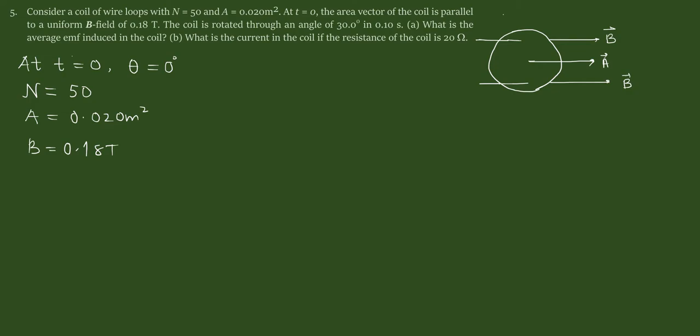Now in the time period of 0.10 seconds the orientation is changed so that the angle between the area vector and B is 30 degrees.